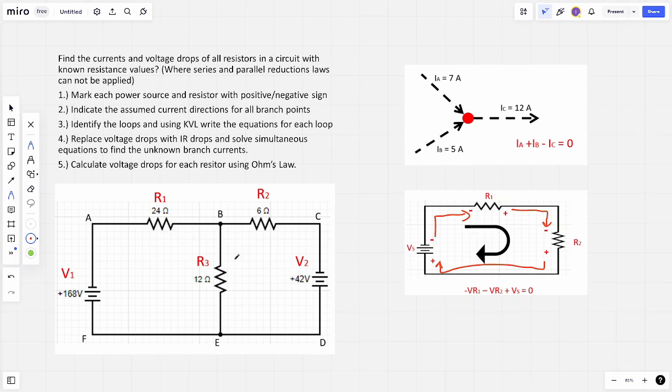Can you see how we've got two loops which is A, B, E, F, A, so this is one loop and then we've also got C, B, E, D because the negative terminals and the negative terminals are both here. And then we're going to identify the loops which we already discussed, so there's two, and using Kirchhoff's voltage laws write the equations for each loop so we can do that.